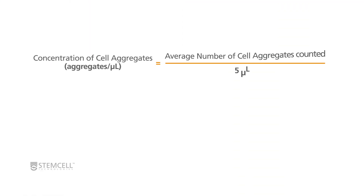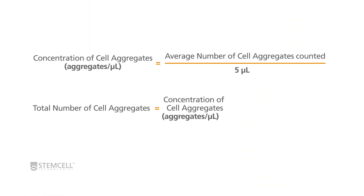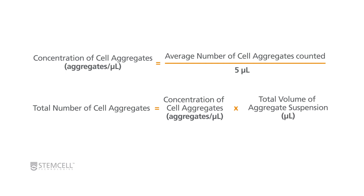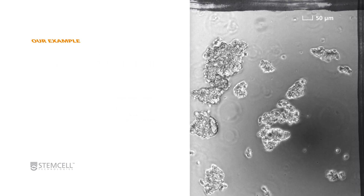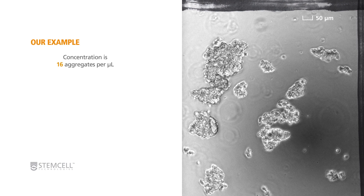Calculate the concentration of cell aggregates and the total number of cell aggregates in the mixture using the total volume of aggregate suspension. In our example, the concentration is 16 aggregates per microliter and the total volume is 1000 microliters, which brings the total number of cell aggregates to 16,000.